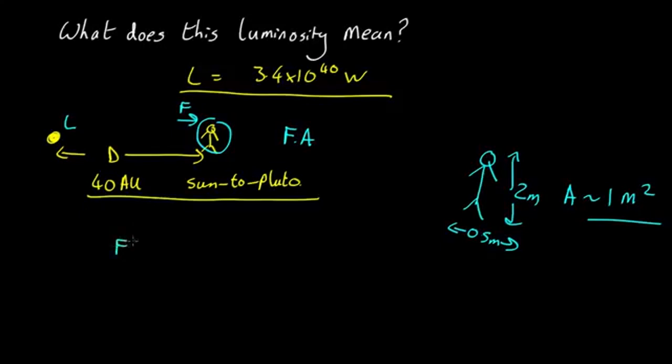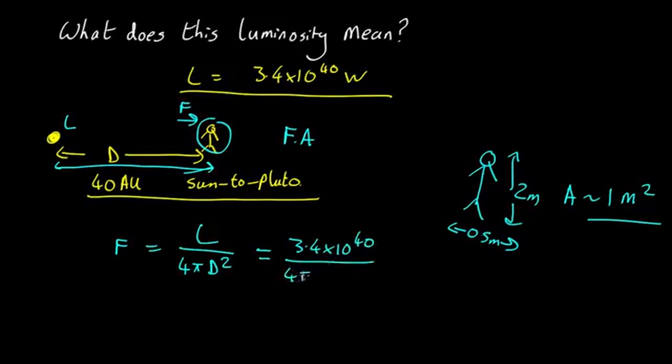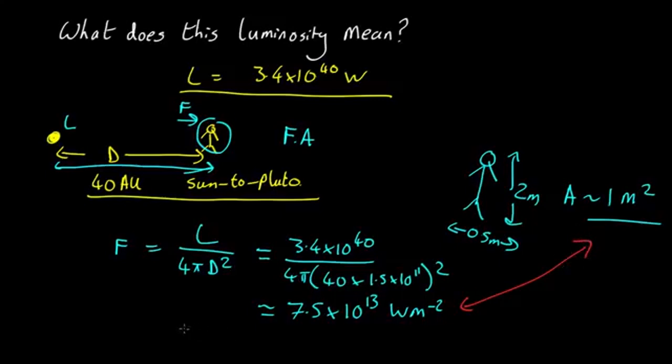We know that flux equals luminosity over 4π d squared. We don't need to worry about redshift here because the universe isn't expanding appreciably over this short distance. This comes out as 3.4×10^40 over 4π times 40 AU, which is 40 times 1.5×10^11 meters squared. That comes out at 7.5×10^13 watts per meter squared. As the person's got about 1 square meter, the power absorbed by a person is about 7.5×10^13 watts.